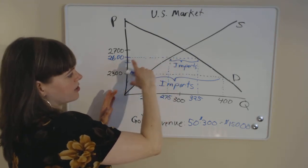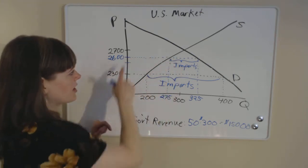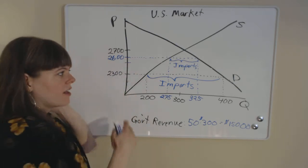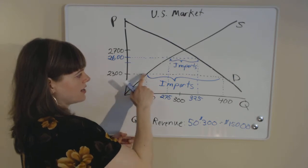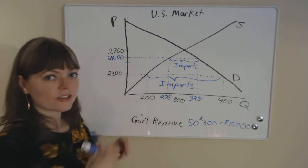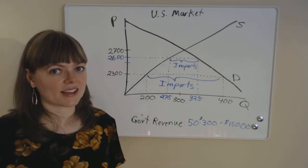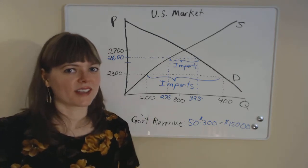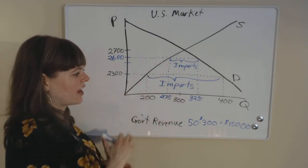So when we impose this tariff, the producer surplus went from the tiny triangle here to the big triangle right here. So producers definitely gain from this tax. As a matter of fact, they probably lobbied the government to get this tax in the first place. So consumers lose, producers gain,